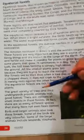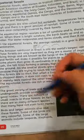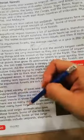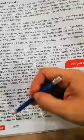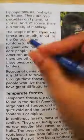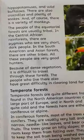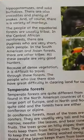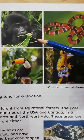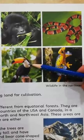The great variety of trees and thick undergrowth provide animals with good homes. There are millions of small insects in these forests — so many different species that many have not even been named. Birds and larger animals also love these forests. Some of the large animals include leopards, elephants, hippopotamuses, and wild buffaloes. There are also crocodiles, plenty of snakes, and a variety of monkeys.